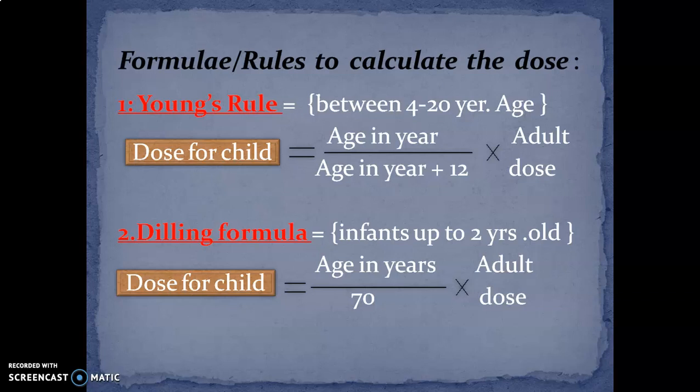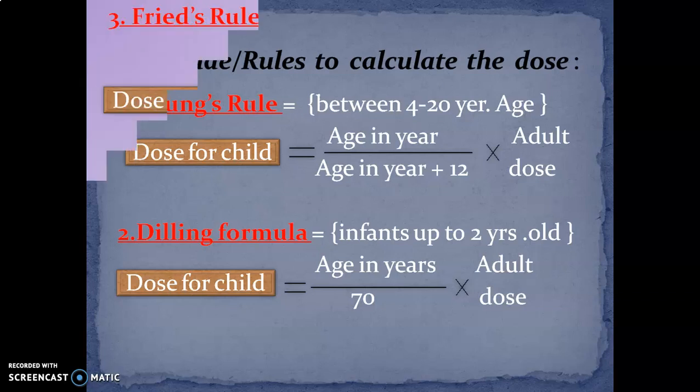Dilling's formula: when the age of the infant is up to 2 years, the dose is equal to age in years divided by 70, multiplied by the adult dose. Dilling's formula is used for infants up to 2 years: age in years ÷ 70 × adult dose.